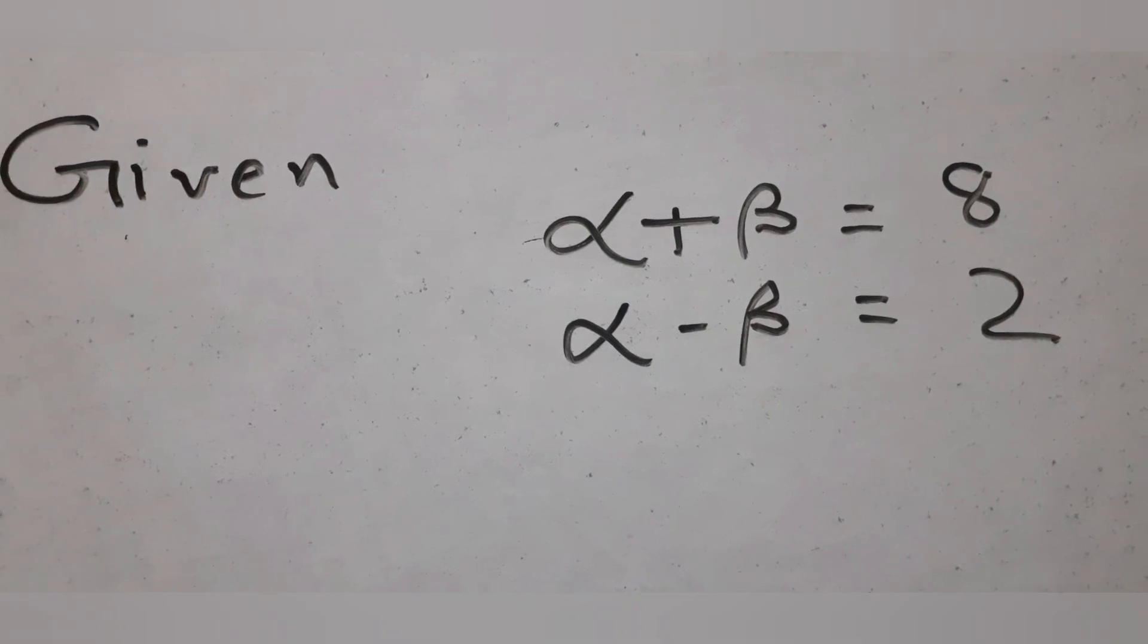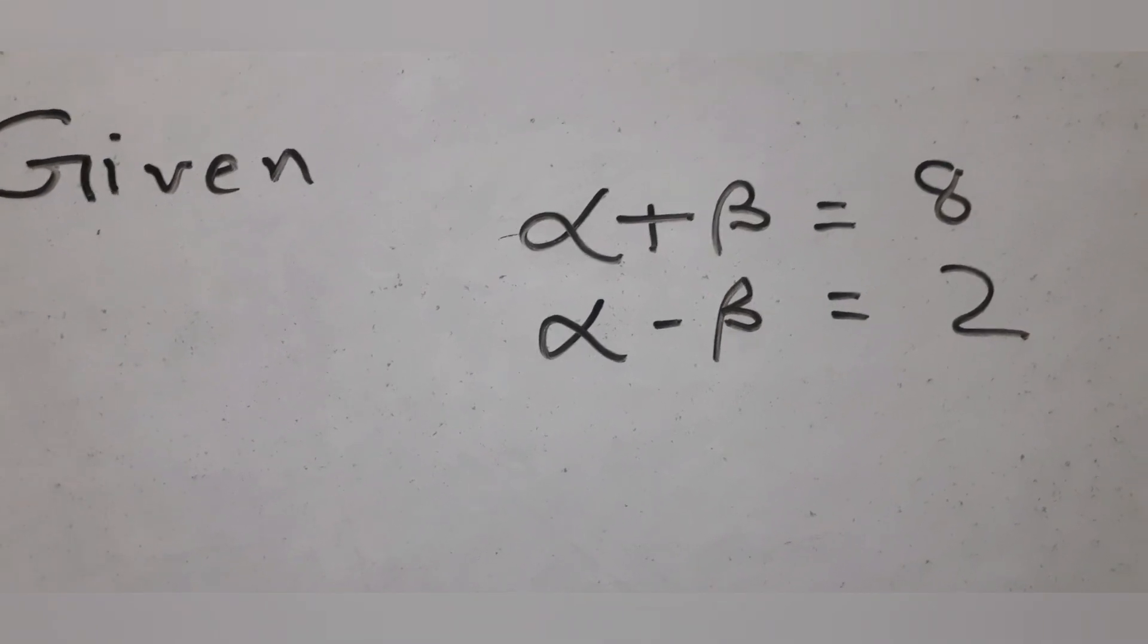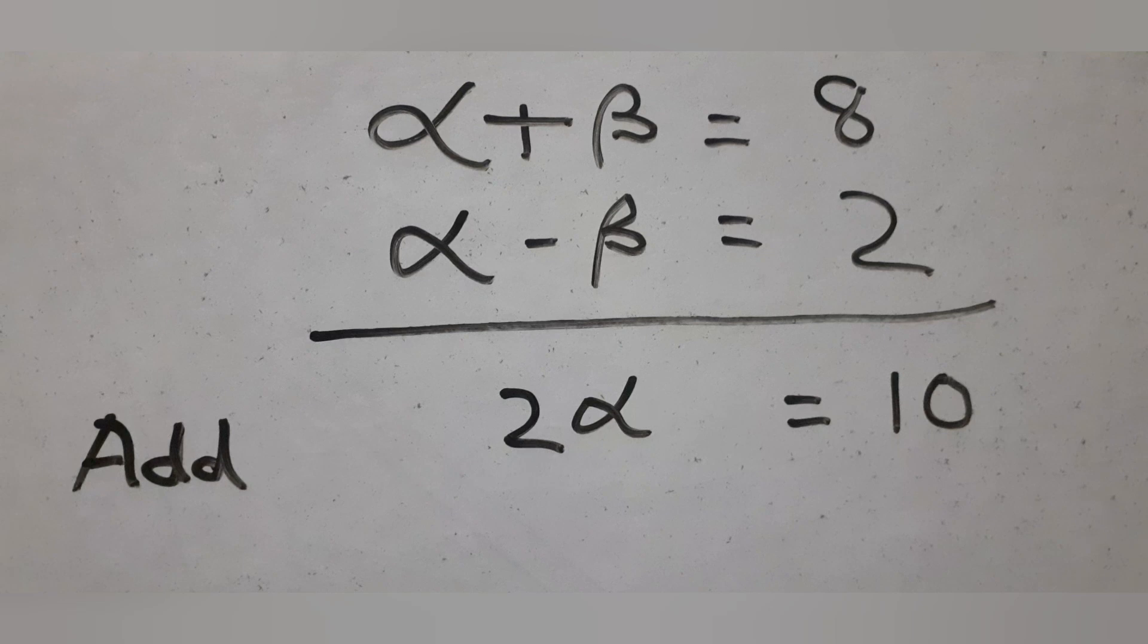Now we use the elimination method to find alpha and beta. We add the two equations to get 2 alpha equal to 10, so alpha equal to 5.